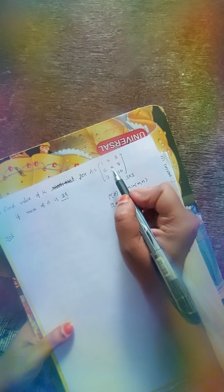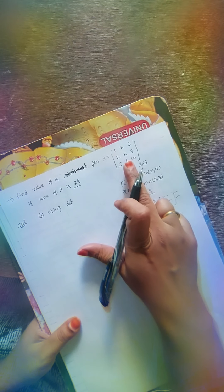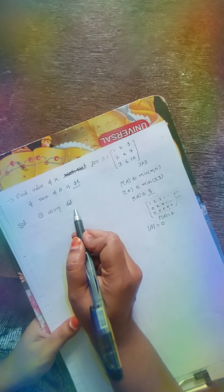We can find the value of k using two methods: the first is using the determinant method, and the second is using the row echelon form method. We will now find the k value using the determinant method.